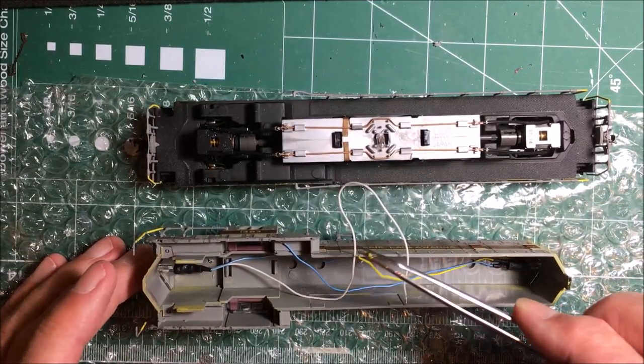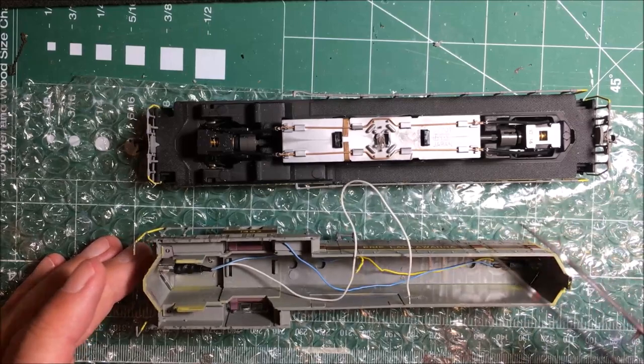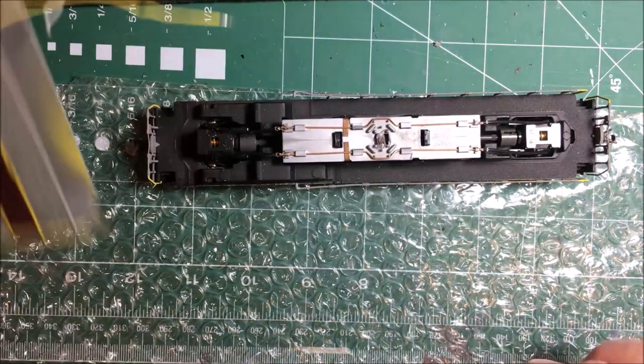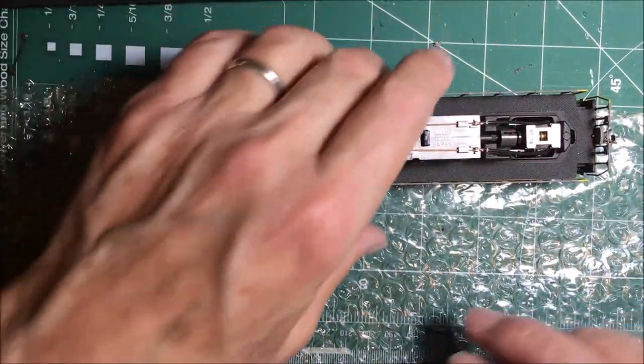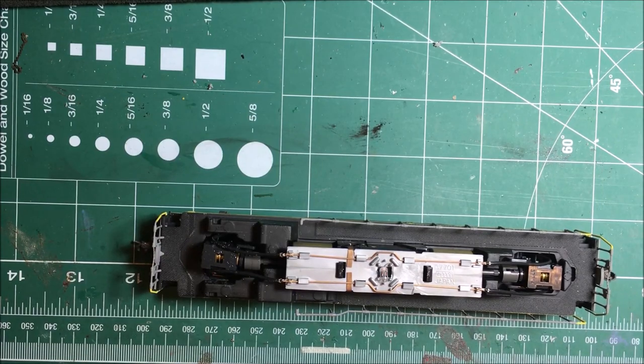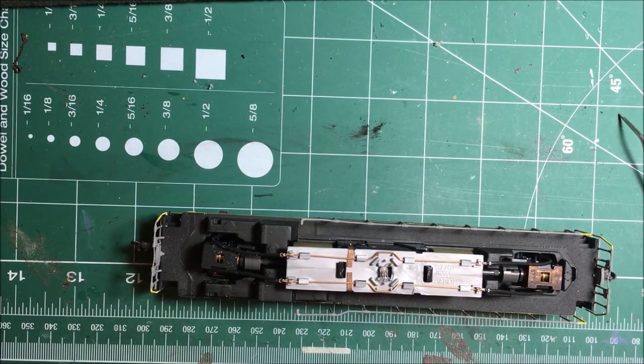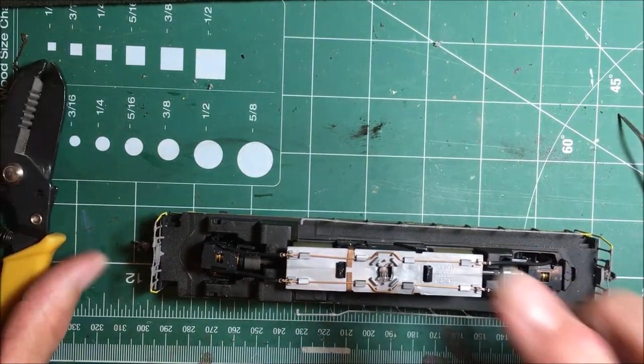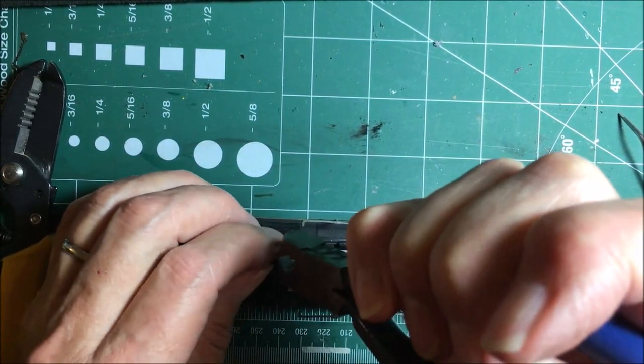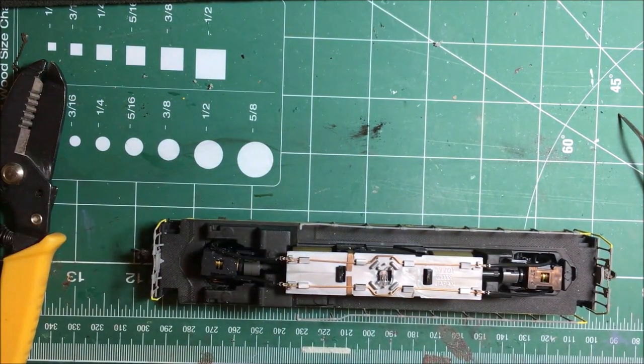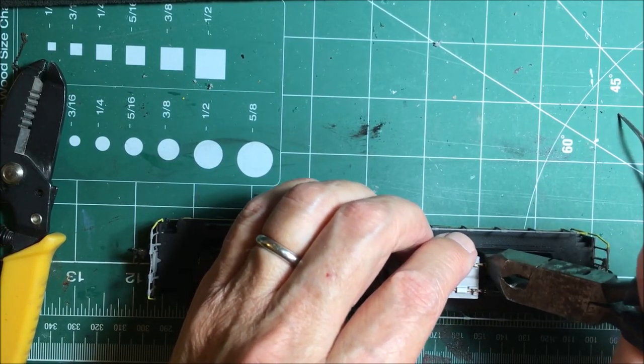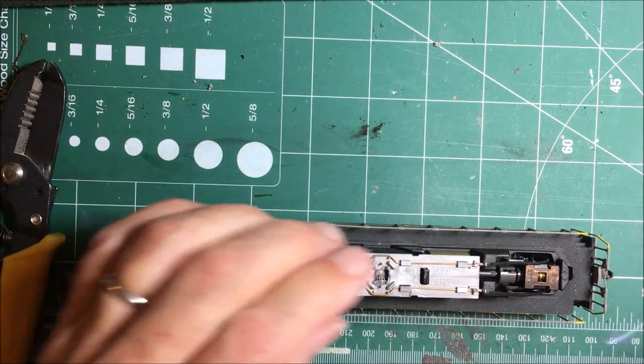I do need to wire up the lights, but I'm going to wait on that until we have the decoder buddy in place on the chassis. Let's get the shell out of the way. And the chassis is now on the operating table. So let's begin. We're going to have to get rid of the light board. So let's cut the wires here.